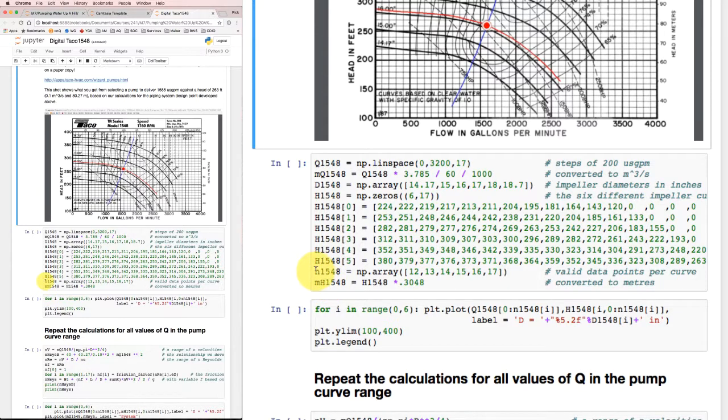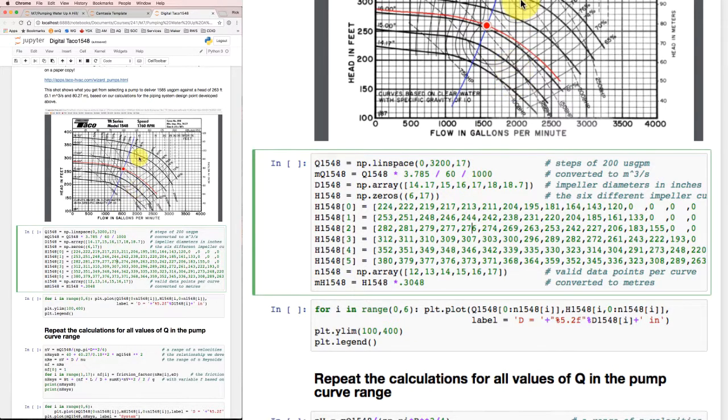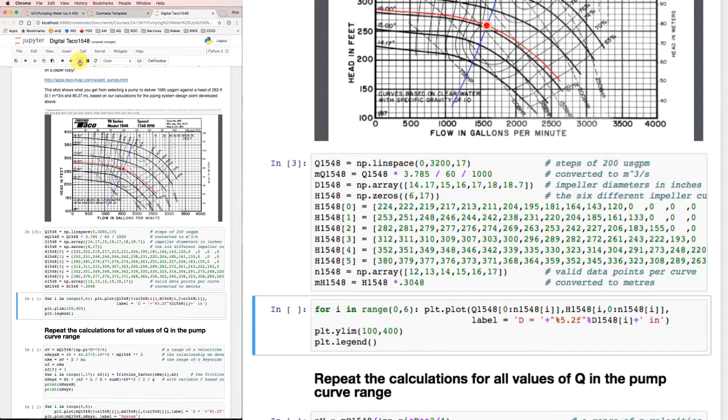Likewise, down here, I've taken all of the head values, and I've multiplied them by 0.3048 to give me a metric version to put the head values in meters. So if I pick that one, I can run that, and I've put all of that data into the array, and I can do something with it.